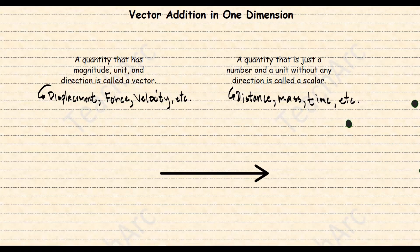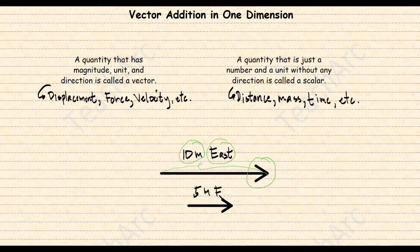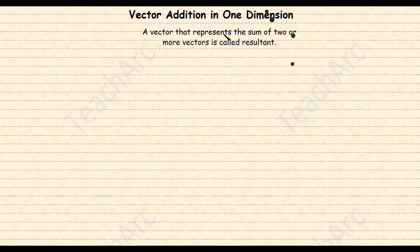You can represent a vector with an arrow. The length of the arrow represents the magnitude of the vector, and the direction of the arrow represents the direction of the vector. In this kind of representation, we would expect that a displacement of 5 meters to the east is shorter than a 10 meter displacement.